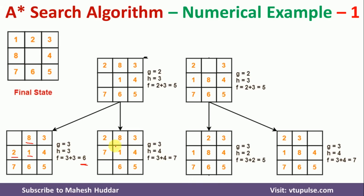For the second possibility (7 bottom to top): 2, 8, 1, and 7 are misplaced — h = 4, f = 3 + 4 = 7. For the third possibility (2 left to right): 1 and 8 are misplaced — h = 2, f = 3 + 2 = 5. For the fourth possibility (3 right to left): 2, 3, 1, 8 are misplaced — h = 4, f = 3 + 4 = 7. The third pattern has the smallest value, so we select it and continue.